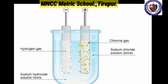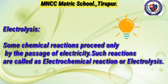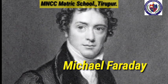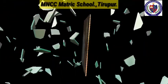This is a very important reaction to produce chlorine industrially. Some chemical reactions proceed only by the passage of electricity — such reactions are called electrochemical reactions or electrolysis. The term electrolysis was introduced by Michael Faraday in the 19th century. Electrolysis is a combination of 'electron' plus 'lysis' — electron is related to electricity, and lysis means decomposition.